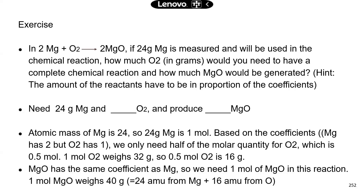With a balanced chemical reaction, this helps you figure out how much of a particular substance you need to do a chemical reaction. In this chemical reaction, if 24 grams of magnesium is measured and will be used, how much oxygen in grams would you need for a complete chemical reaction? And how much magnesium oxide will be generated?